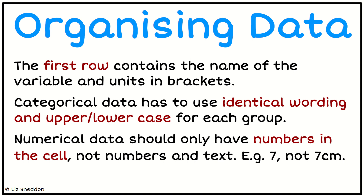For numerical data, we need to make sure that the cell has a number only in it. So having the number 7 is fine — it recognises that it's a number and knows how to treat it as numerical. If I write '7 centimetres', so I've put letters in there as well as the number, then the program automatically recognises that as a category. And so I can't do any numerical analysis on it — I can only do categorical analysis on it. So that's a useful tip.